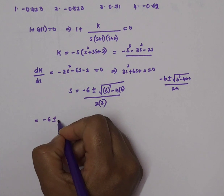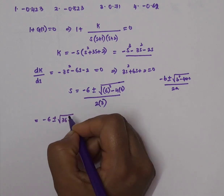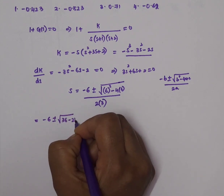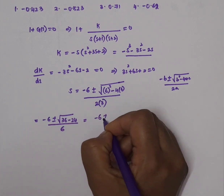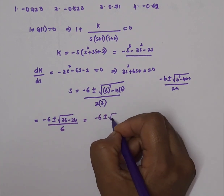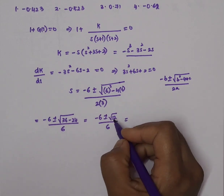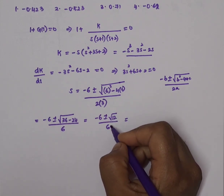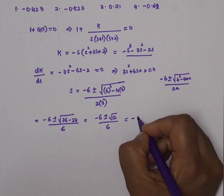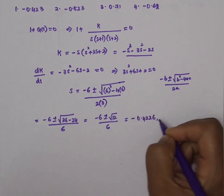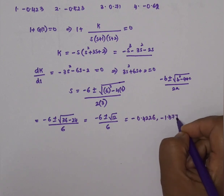This simplifies to (-6 ± √12) / 6. We get two roots: s = -0.4226 and s = -1.577.